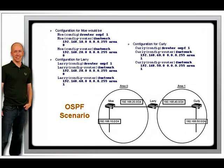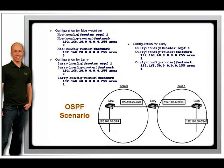Because you are using wildcard masks to match the IP address on your directly connected interfaces, you could also use the wildcard mask of 0.0.0.0 to match the exact address. Just as with IP access lists, a wildcard mask of 0.0.0.0 would match a specific address. For example, if Curly had the IP address 192.168.40.1 on one interface and 192.168.50.1 on another, you could configure Curly's router using a wildcard mask of 0.0.0.0. Using a wildcard mask that matches the IP address of the interface is equivalent to using a wildcard mask that matches the network. For the exam, focus on matching the entire network using the 0.0.0.255 wildcard mask.